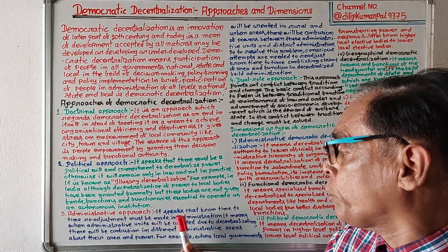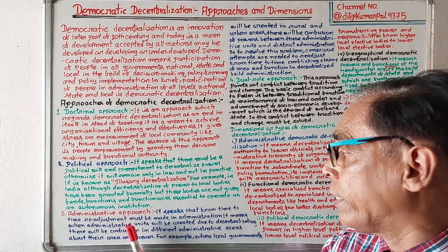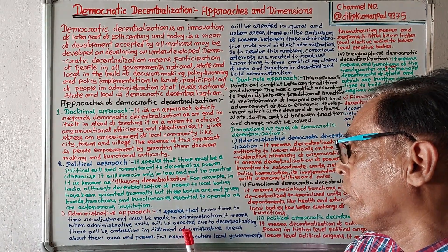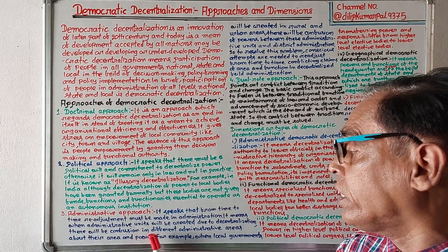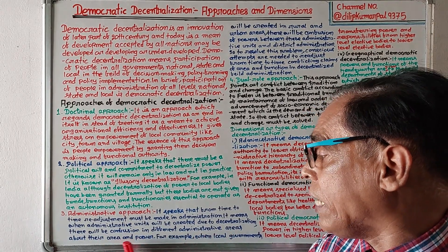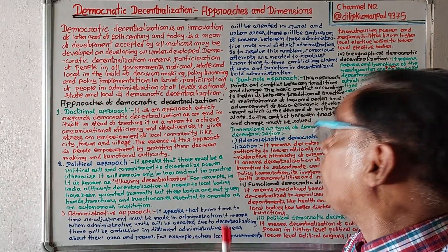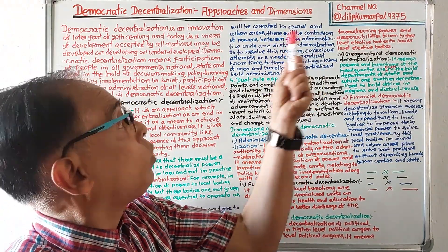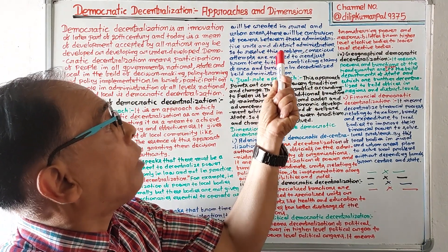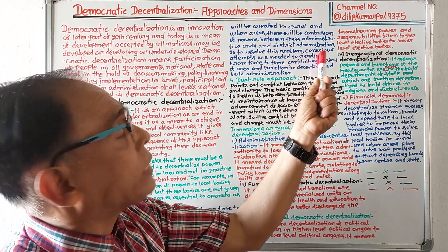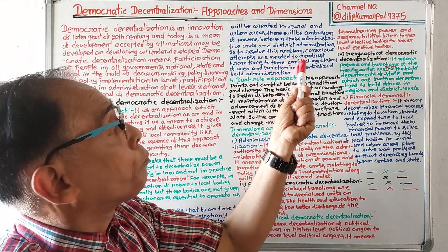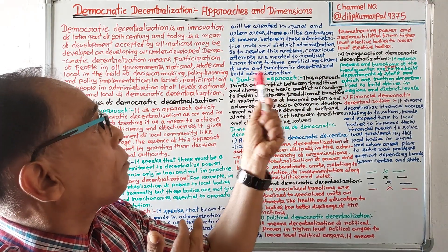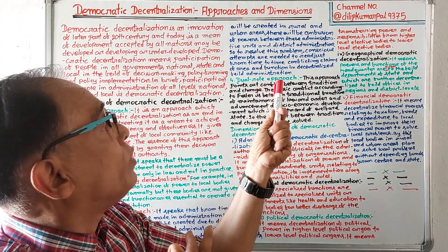Administrative approach speaks that from time to time, readjustments must be made in administration. When administrative units are created due to decentralization, there will be confusion in different areas about authority and power. For example, when local governments are created in rural and urban areas, there will be confusion between these units and district administration. Conscious attempts are needed to readjust conflicting claims of area and functions in decentralized field administration.